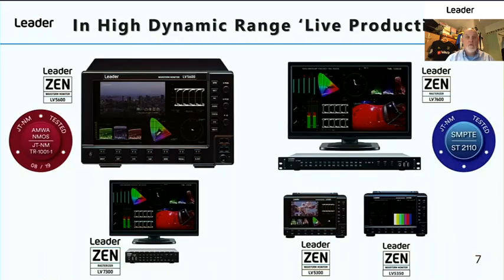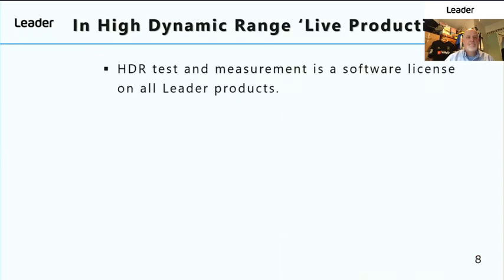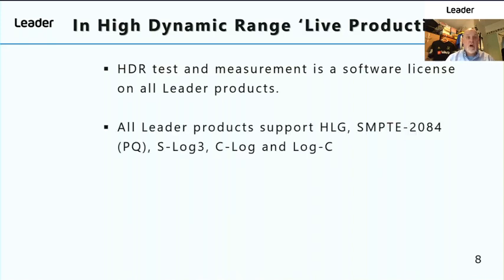Fortunately, all of the products in the LEADER XEN series support high dynamic range analysis as a software license key, which means the unit doesn't need to be returned to an accredited service centre for upgrade — it can be upgraded in situ without any downtime for the production. As well as hybrid log gamma, SMPTE 2084 PQ, and S-Log 3, analysis of C-Log and Log C is also available with the LEADER software license.